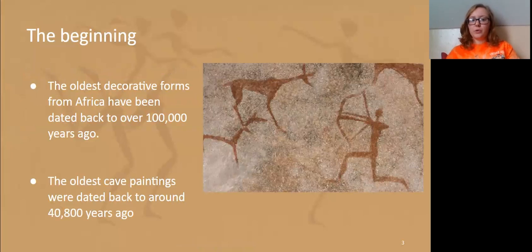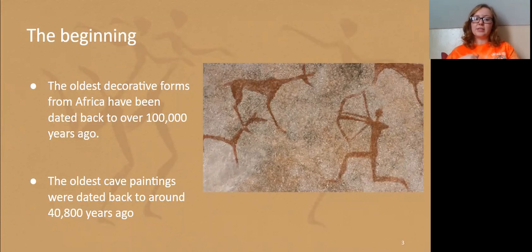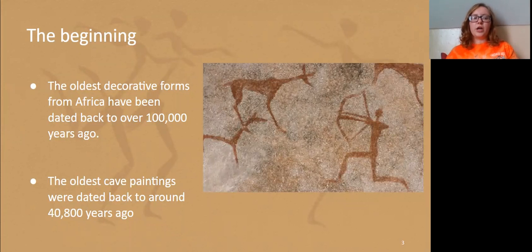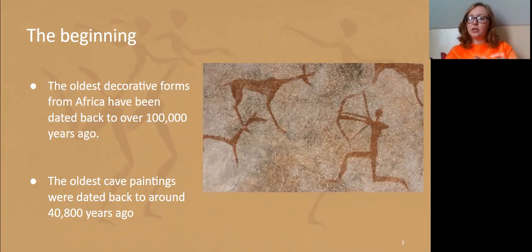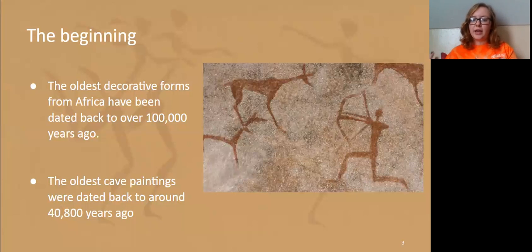The oldest decorative forms date from Africa and some have been dated to over 100,000 years old. The oldest cave paintings have been dated to around 40,800 years ago. We know they came from Africa because at that time period, that was where most of the nomads lived. Nomads never settled in one place — they moved from area to area. That's what the nomadic lifestyle means. That's where they lived because the temperature was pretty constant there.